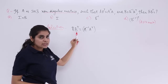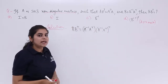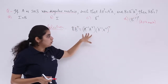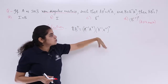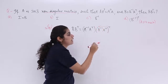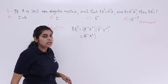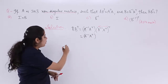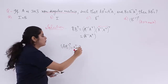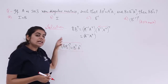What will B-transpose be? It will be the transpose of the expression itself — that is, (A-inverse A-transpose) whole transpose. We know the reversal order of transpose multiplication: (AB)ᵀ = BᵀAᵀ. So the second thing comes first. We get A-transpose-transpose, and then A-inverse-transpose.